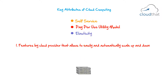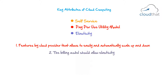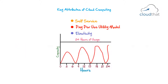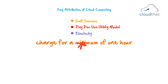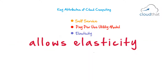For this to happen, you need two critical things. First, you need features provided by the cloud provider that allow you to easily and automatically scale up and down — if scaling was manual and tedious, it would hamper elasticity. Secondly, the billing model should allow elasticity. If the cloud provider charges a minimum of 24 hours each time you start a server, there is no financial benefit. Most cloud providers charge a minimum of only one hour, and many even 10 minutes, so it allows elasticity.